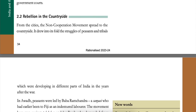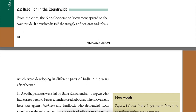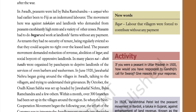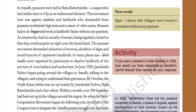Rebellion in the Countryside. From the cities, the non-cooperation movement spread to the countryside. In Awadh, peasants were led by Baba Ram Chandra, a sanyasi who had earlier been to Fiji as an indentured labourer. The movement here was against talukdars — landlords who demanded from the peasants exorbitantly high rents and a variety of other excesses. Peasants had to do beggar and work at landlords' farms without any payment. As tenants, they had no security of tenure, being regularly evicted so that they could acquire no right over the leased land. The peasants' movement demanded reduction of revenue, abolition of beggar, and social boycott of oppressive landlords. In many places, nai-dhobi bands were organized by panchayats to deprive landlords of the services of even barbers and washermen.